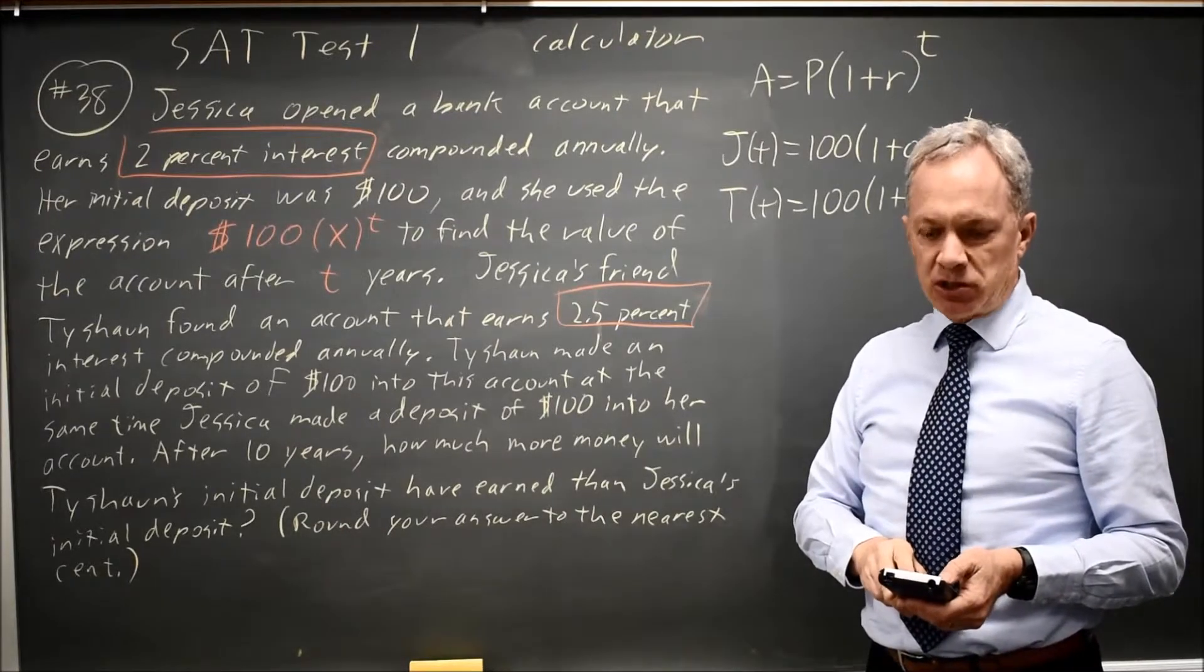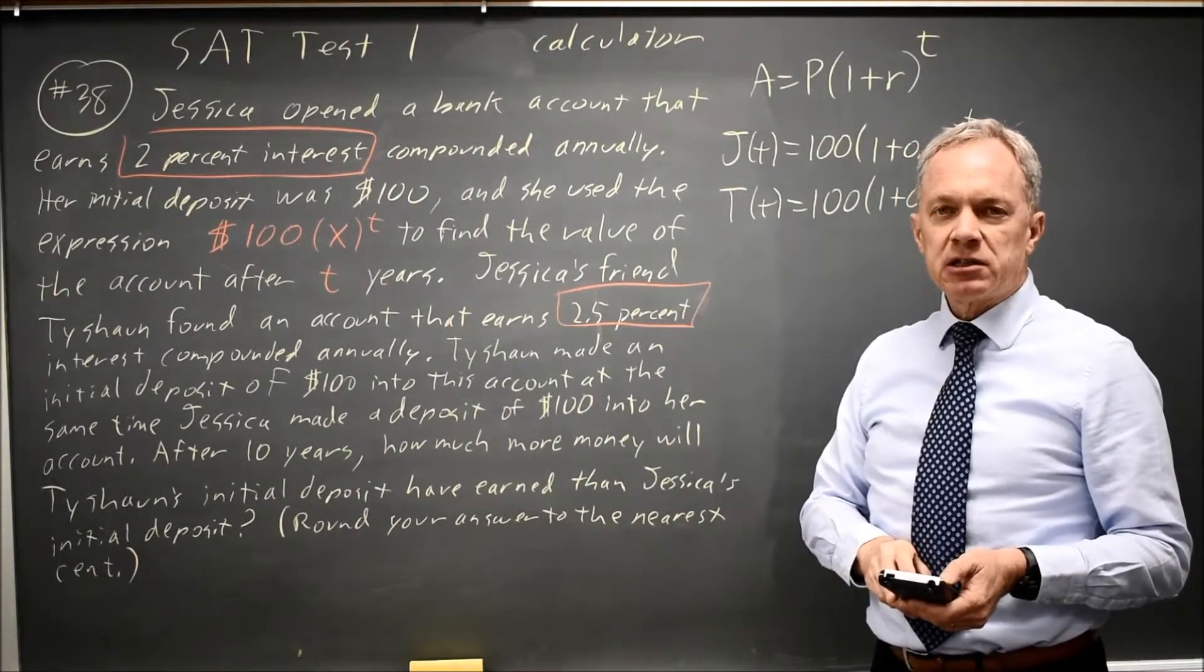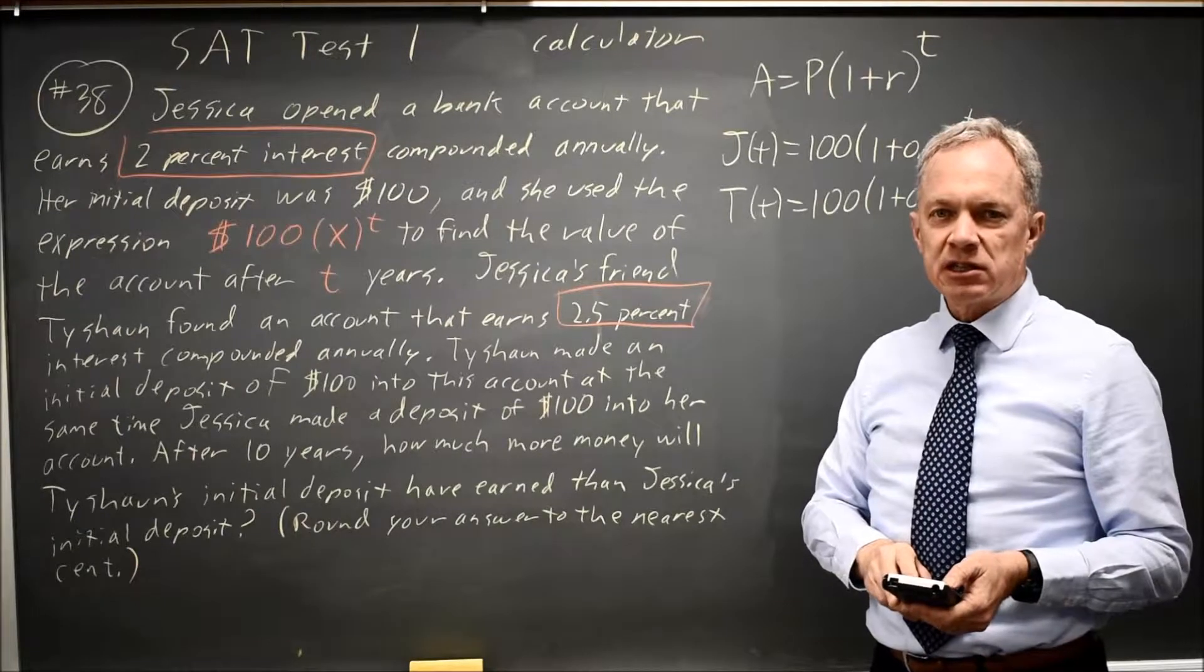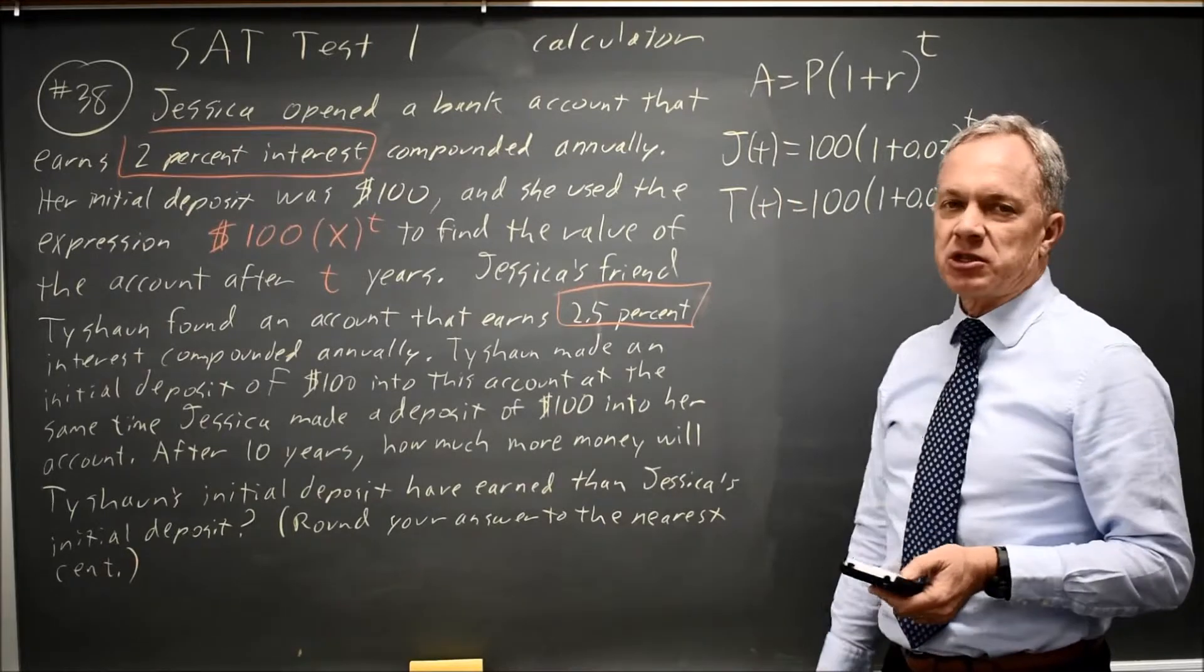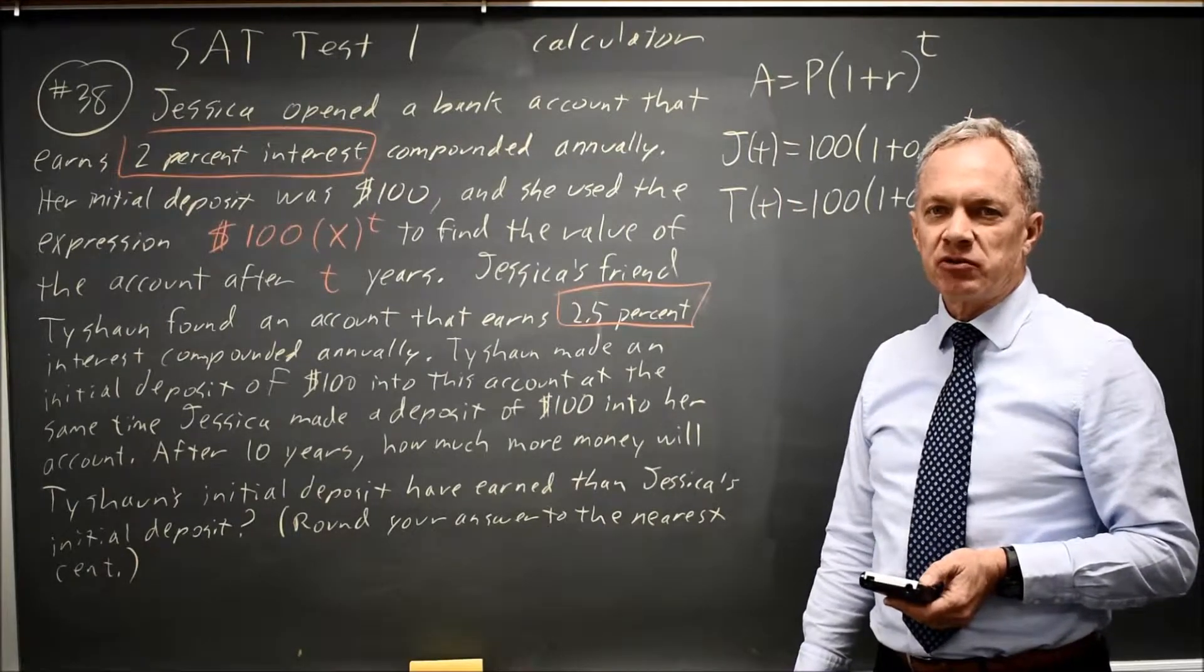At time 1, Jessica has $102 and Tyshawn has $102.50, which is 2% interest for Jessica to go up to $102, and 2.5% to go from $100 to $102.50.